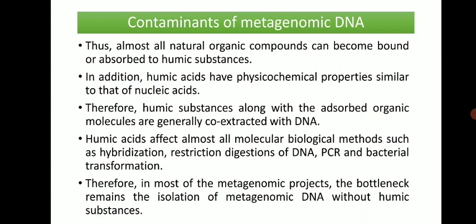Humic substances along with adsorbed organic molecules are generally co-extracted with DNA. Humic acid affects almost all molecular biological methods such as hybridization, restriction digestion, PCR, and bacterial transformation. Therefore, in most metagenomic projects, the bottleneck remains the isolation of metagenomic DNA free from humic substances — this is a main and crucial step.